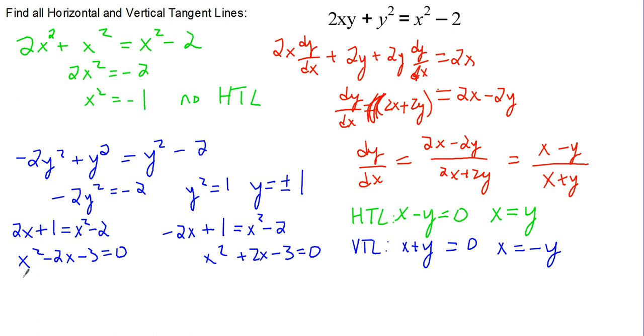When we factor each of these out, we get x minus 3 and x plus 1 on the left part, and x plus 3, x minus 1 on this side, giving us values of x equals 3, x equals negative 1, x equals negative 3, and x equals 1.